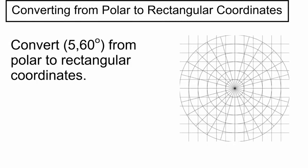This video we're going to talk about how to convert from polar to rectangular, so from R theta to XY coordinates. So I've got a couple examples we're going to work through. The first one says convert 5, 60 degrees from polar to rectangular coordinates.